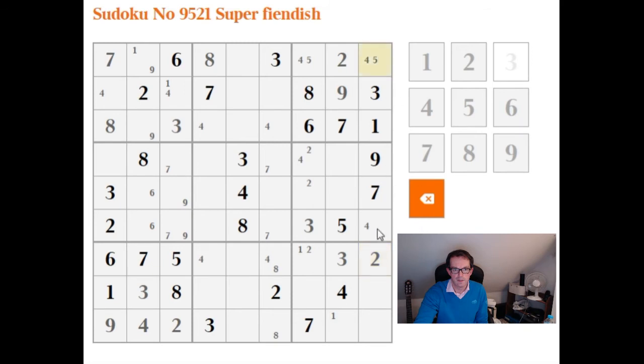And here you can see that 8 is actually sort of a hidden single here—it can only go in this cell in column 9. You can write that in, and this is an example of why this logic is good, because that allows us to fill this 8 and this 4 straight away.